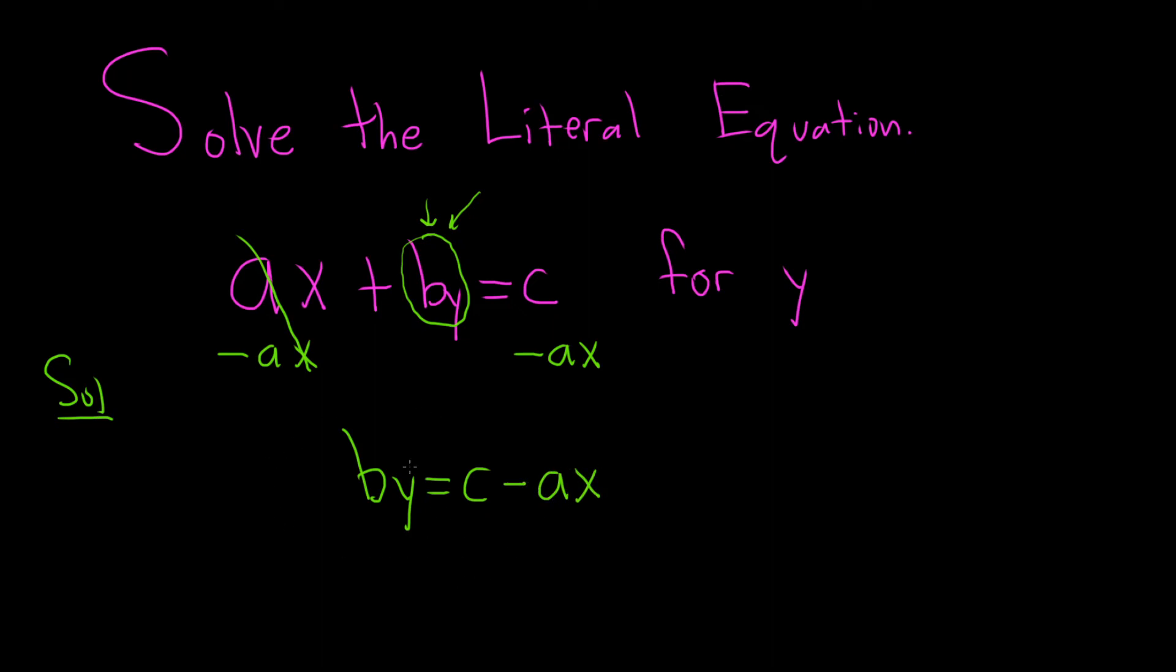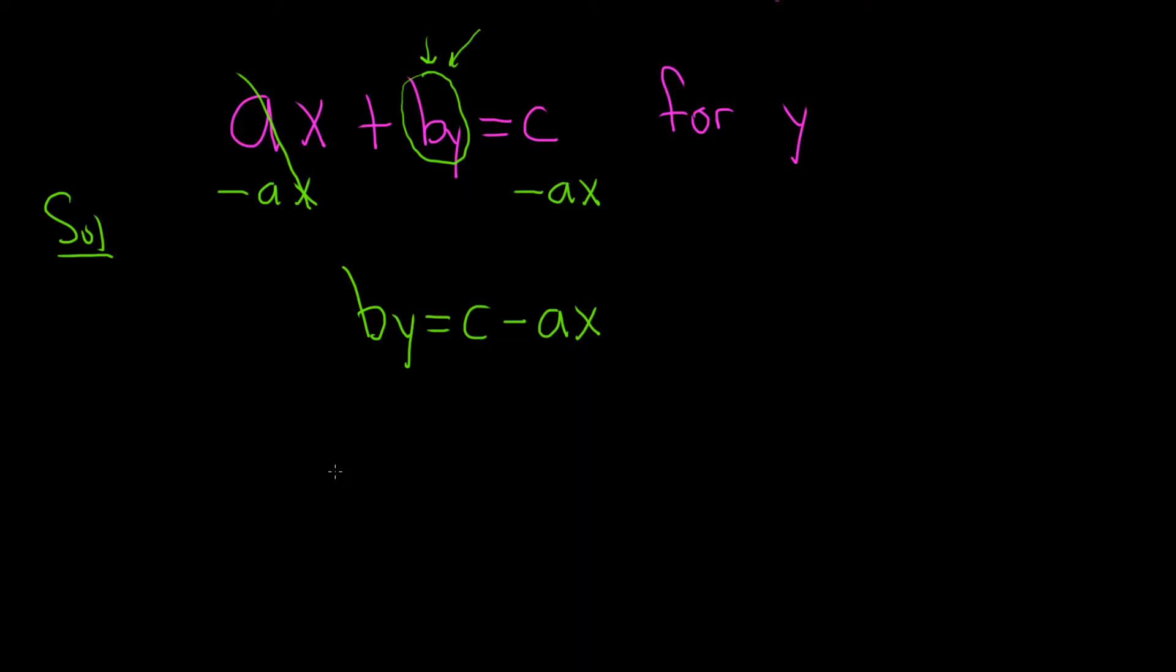Now that we have the y term by itself on one side, we can finish the problem. It's being multiplied by b, so to undo that, we need to divide by b.